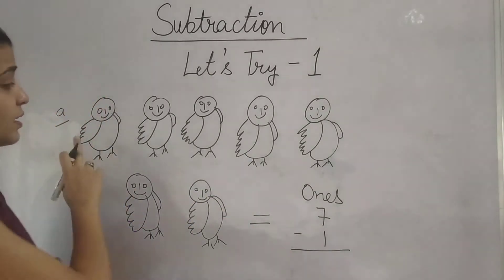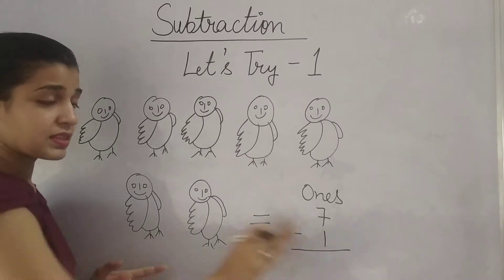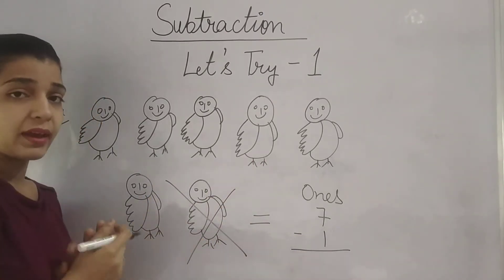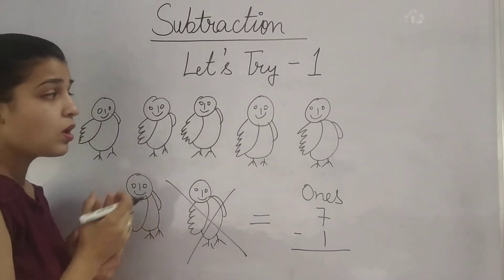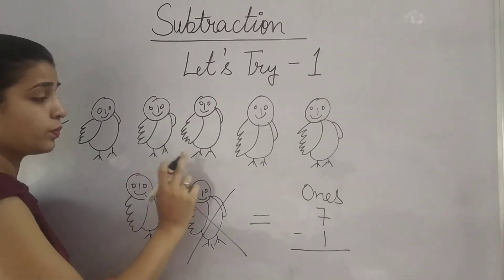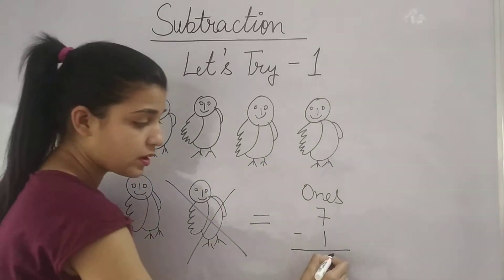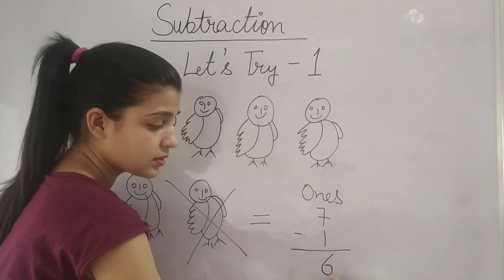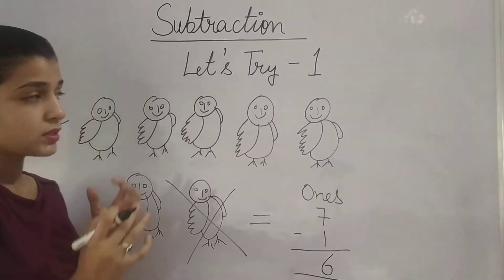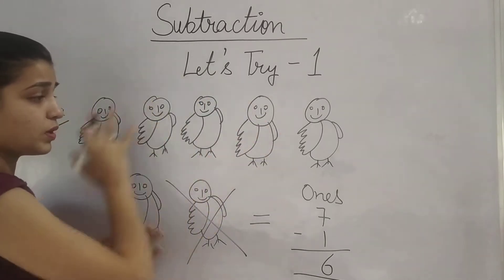Now you have to find out: from 7 birds, if I subtract 1, how many birds will we get in the answer? I have 7 birds; subtract 1 bird. Now how many birds are left? 1, 2, 3, 4, 5, 6. How many birds? 6 birds.